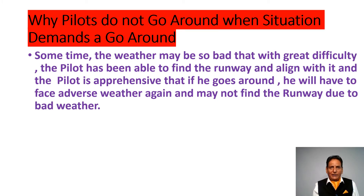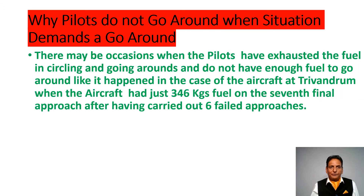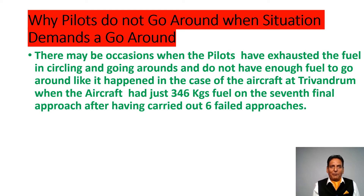Sometimes the weather may be so bad that with great difficulty the pilot has been able to find the runway and align with it, and the pilot is apprehensive that if he goes around he will have to face adverse weather again and may not find the runway. There may also be occasions when pilots have exhausted their fuel in circling and going around and do not have enough fuel to go around again — as happened in the case of the aircraft at Thiruvananthapuram, which had just 346 kg of fuel on the seventh final approach after having carried out six failed approaches.